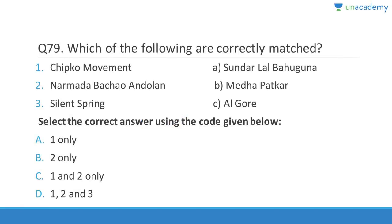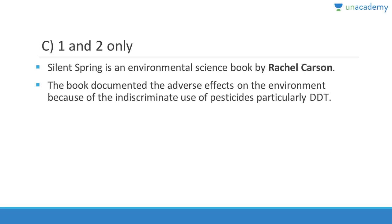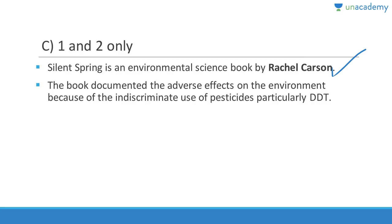Question 79: Chipko Movement — Sundarlal Bahuguna — correct. Silent Spring is a book written by Rachel Carson, not Al Gore. Al Gore was Vice President of the United States. The correct matches are one and two. Silent Spring is an environmental science book documenting the adverse effects of indiscriminate pesticide use, particularly DDT.